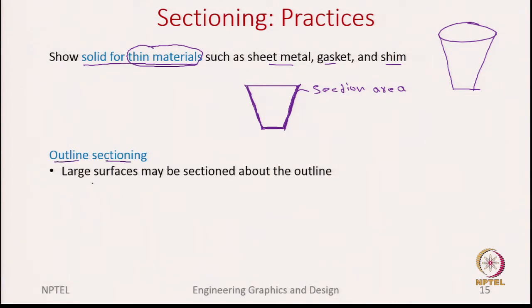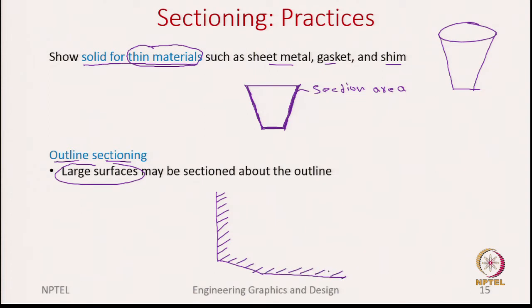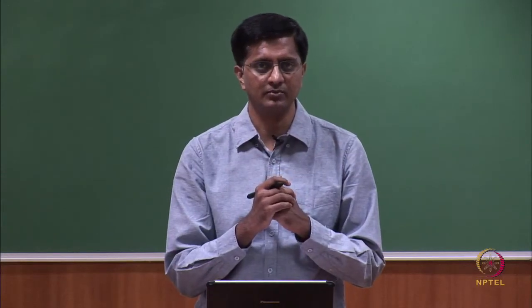There is another sectioning approach called outline sectioning, especially for very large surfaces. If there is one very large surface which needs to be sectioned, instead of spending too much time drawing parallel lines for the complete surface, you can only section the outline - which means on the boundary you show the sections, and that is sufficient. Mind again, this is only for large surfaces. These are some common sense principles, essentially making sure that you do not spend too much time on hatching, while also ensuring that when you look at a drawing, you can identify the section area.